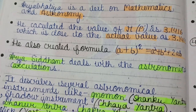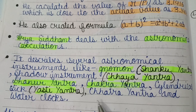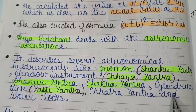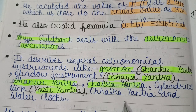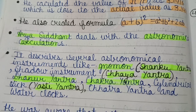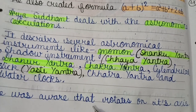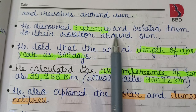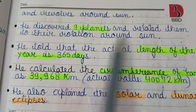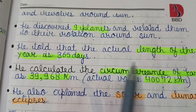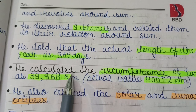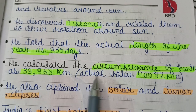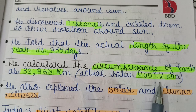Aryabhatiya describes several astronomical instruments like the gnomon (Sanku Yantra), shadow instrument (Chaya Yantra), Dhanura Yantra, Chakra Yantra, cylindrical stick (Yasti Yantra), Chatra Yantra, and water clocks. He was aware that the Earth rotates on its axis and revolves around the Sun. He discovered nine planets and related them to their rotation around the Sun. He calculated the actual length of the year as 365 days and the circumference of the Earth as 39,968 km, while the actual value is 40,072 km.